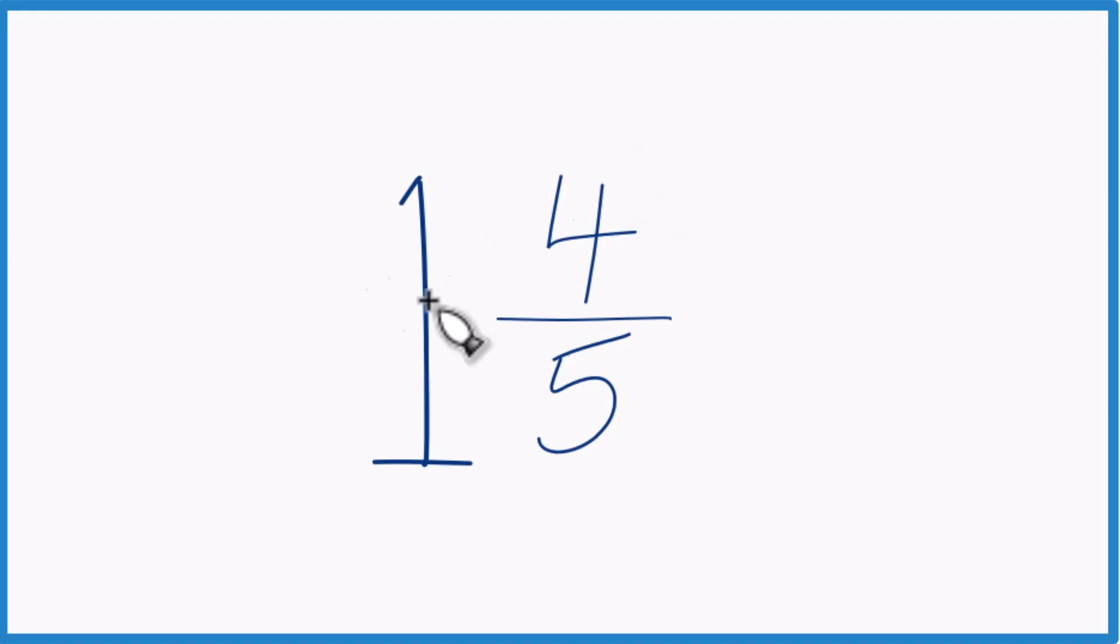Let's write the mixed number 1 and 4 fifths as an improper fraction. Here's how you do it. Take the whole number 1 times 5, that's 5.